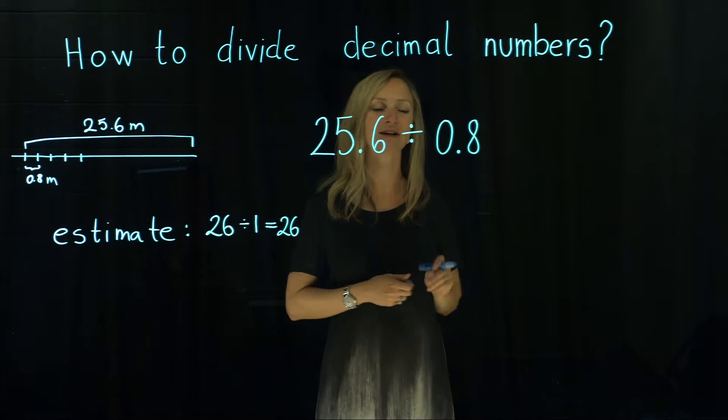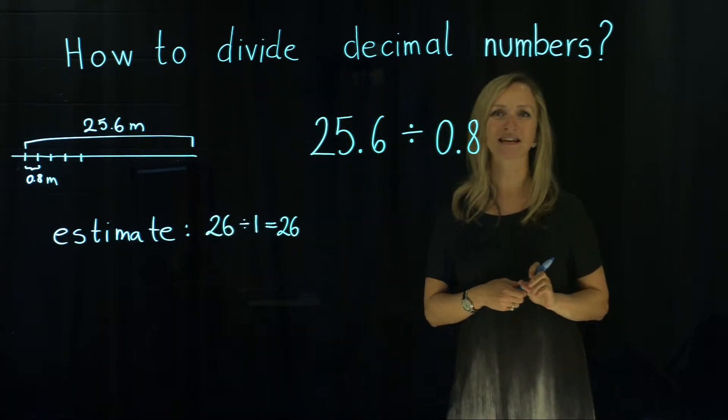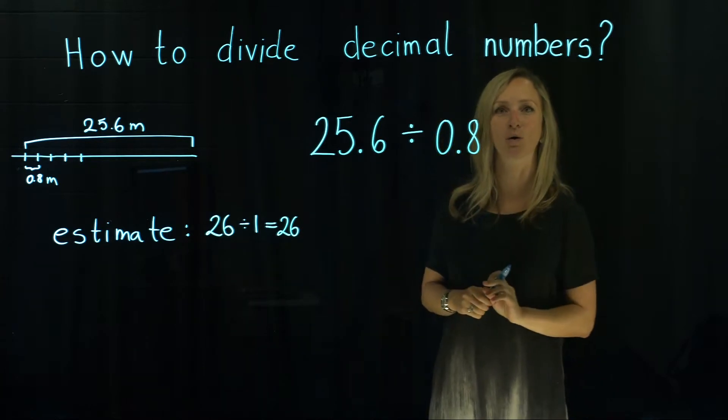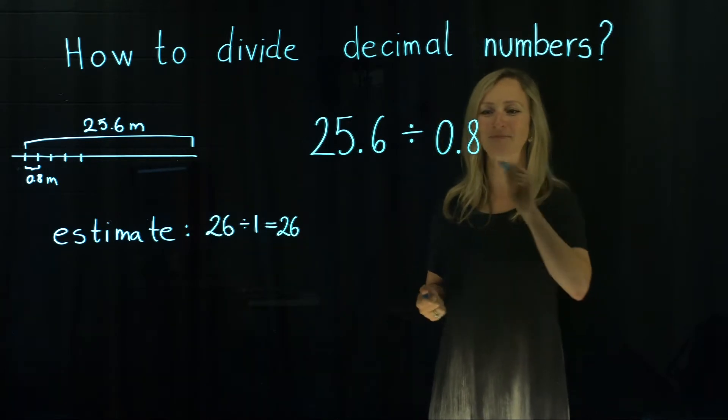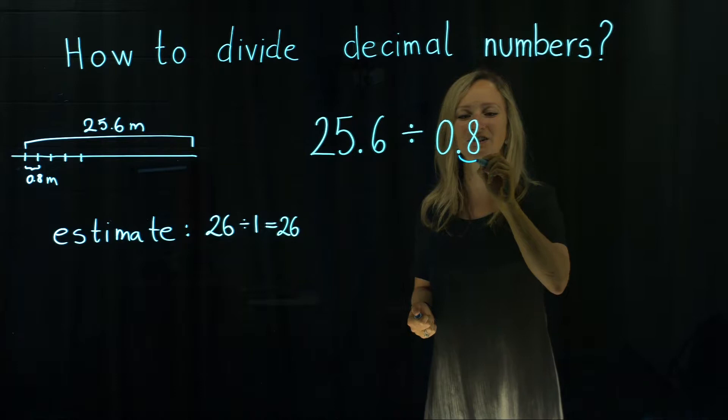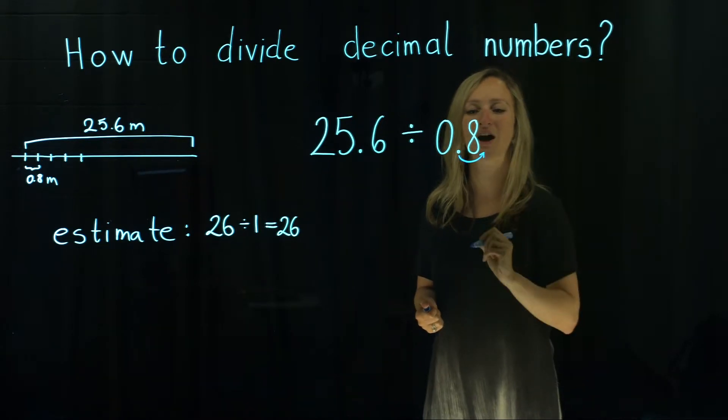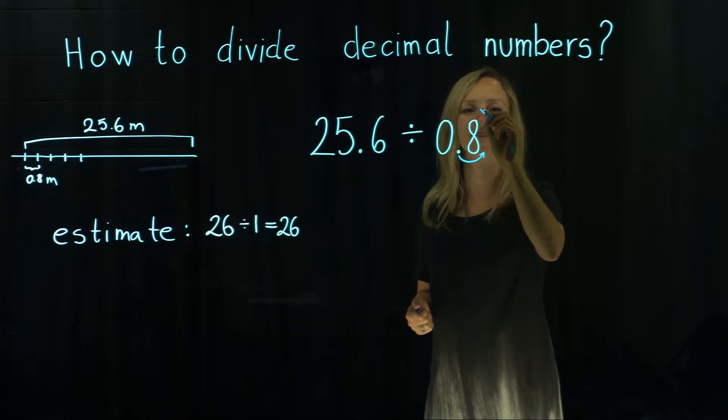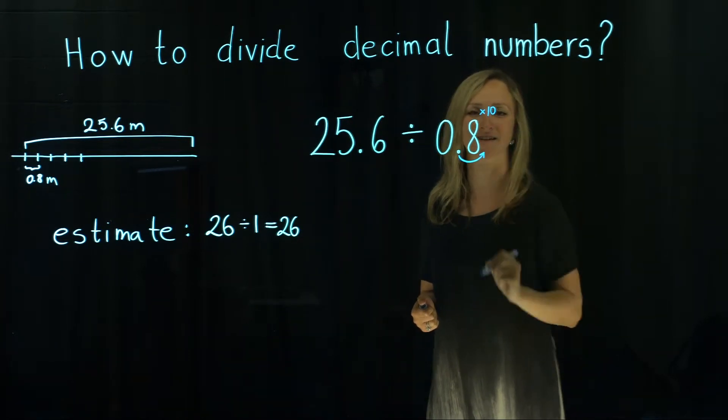And how do we divide two decimal numbers? The idea is that we make the second number a whole number. How can we do that? So we can actually move the decimal point one place to the right. That means that we are timesing by 10 this number.